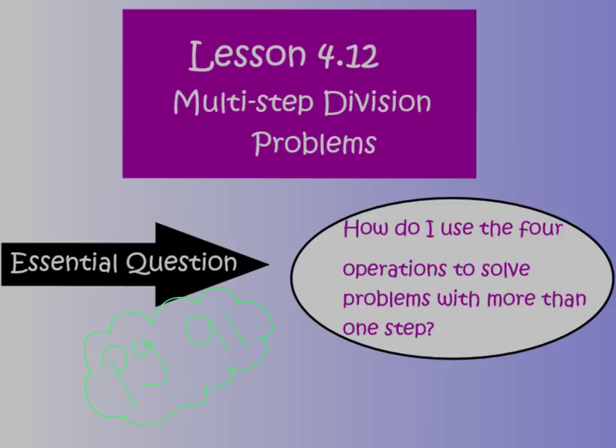Let's write the essential question down at the top of page 91. Our essential question is, how do I use the four operations to solve problems with more than one step? Go ahead and write this essential question down, and then we'll go ahead and get started.